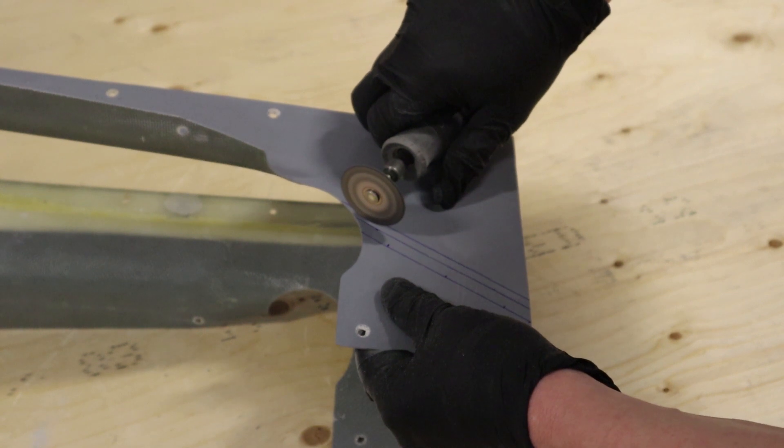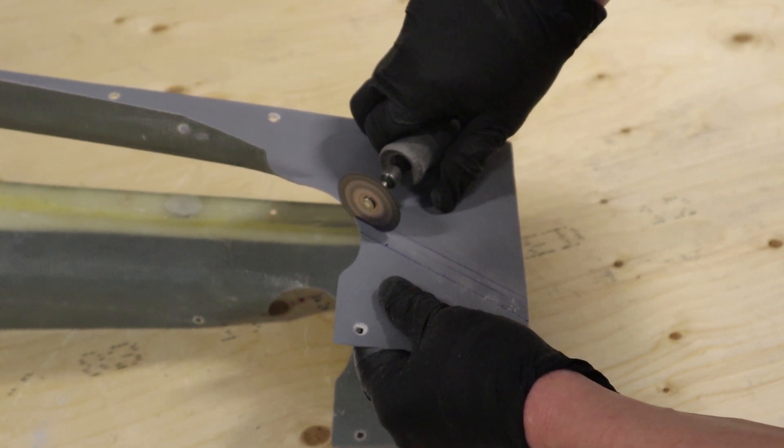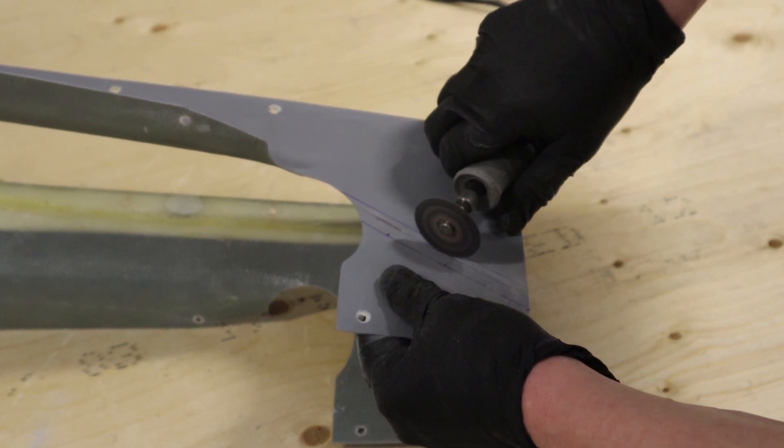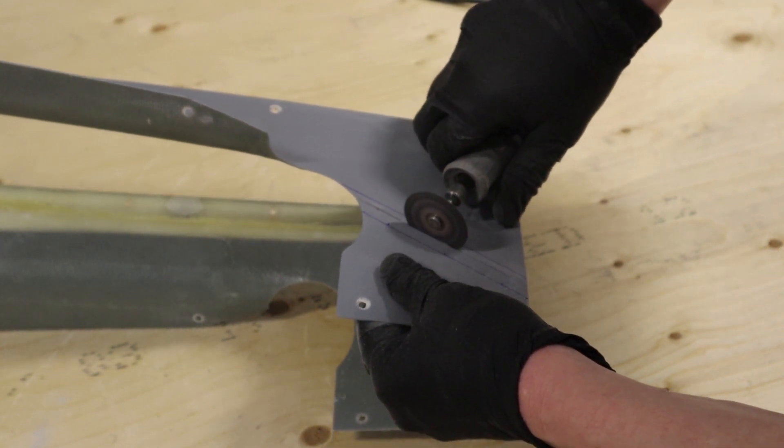Dremel it away. Now here's the key: as we Dremel it away we're not going to remove it completely. We're going to leave a couple little tabs so that the two parts stay joined to each other while we create the flange.